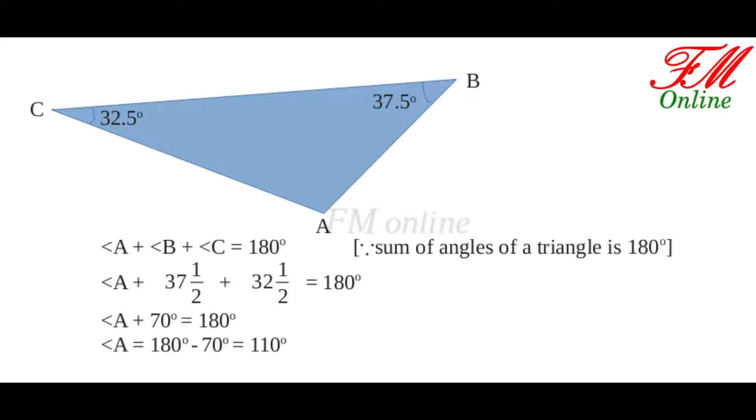Angle A plus angle B plus angle C is equal to 180. So angle A plus 37.5 degrees plus 32.5 degrees is equal to 180. So angle A equals 180 minus 70, which is equal to 110 degrees.